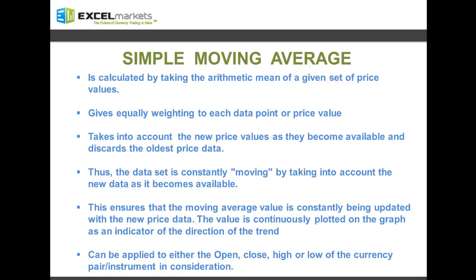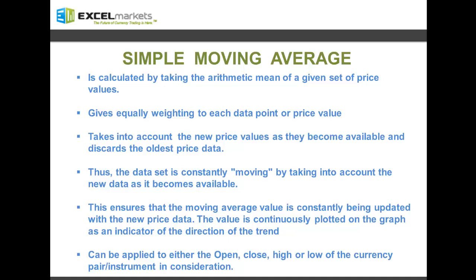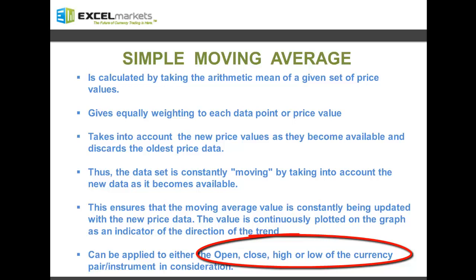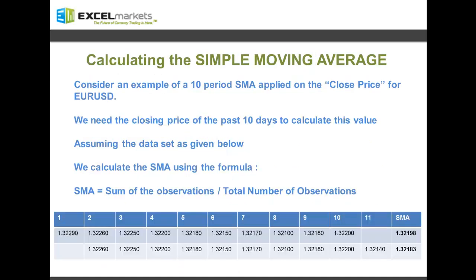The value is continuously plotted on the graph as an indicator of the direction of the trend. While considering the set of price data to apply the simple moving average on, we can select to apply it either on the open price, the close price, the high, or the low of the currency pair or trading instrument in consideration. The simple moving average, or SMA, is the arithmetic mean of a given set of price values — equal to the sum of the price data divided by the total number of values considered.